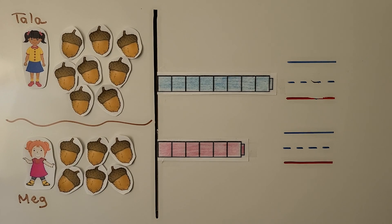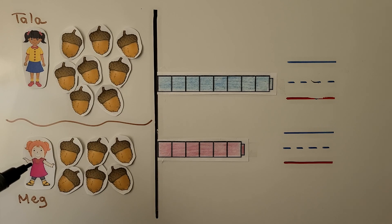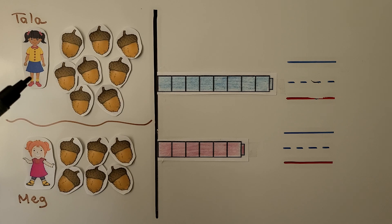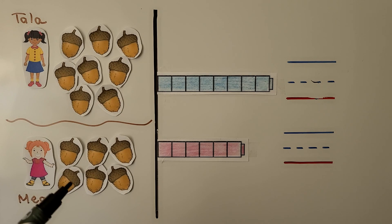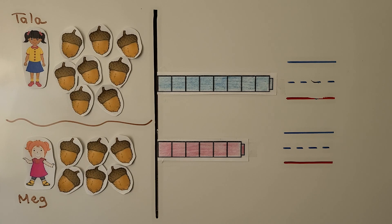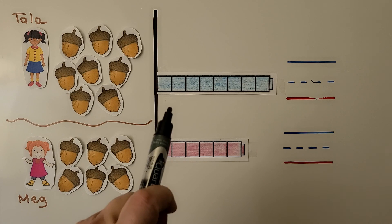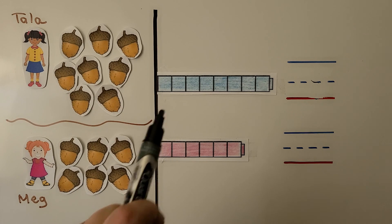Here we have another problem. Here we have Tala and here we have Meg. Tala found eight acorns. Meg found six acorns. Who found fewer acorns? Remember, fewer means less.